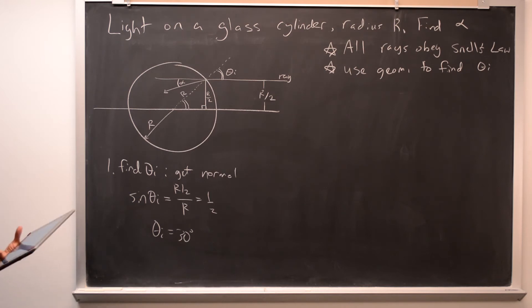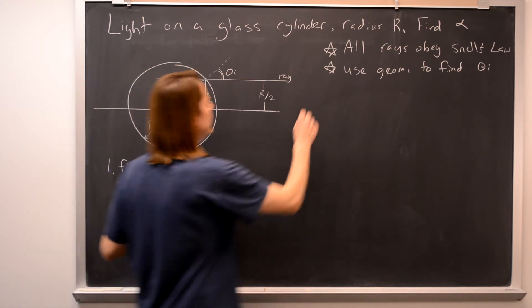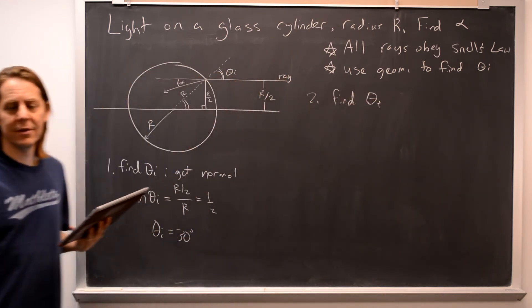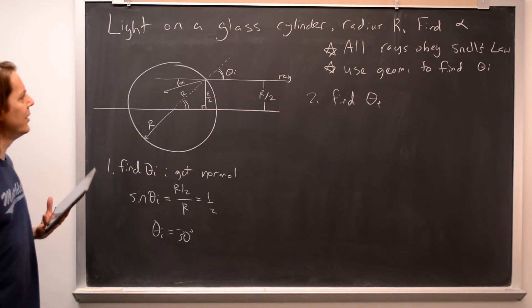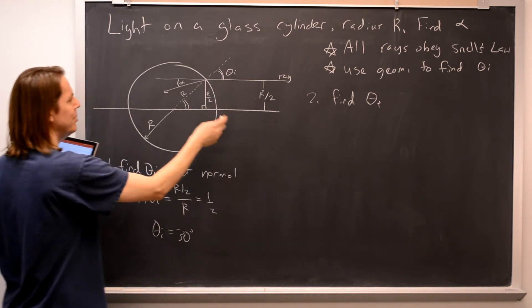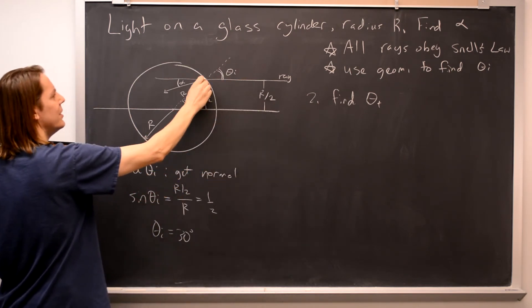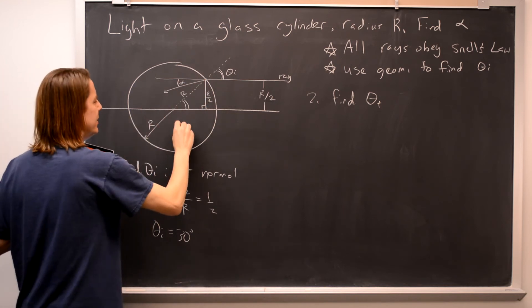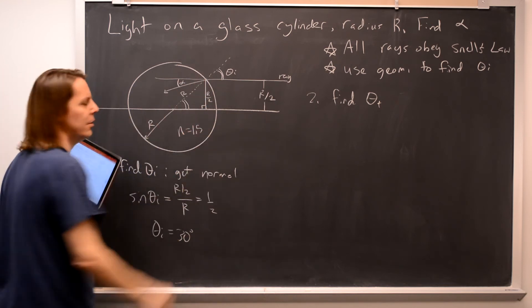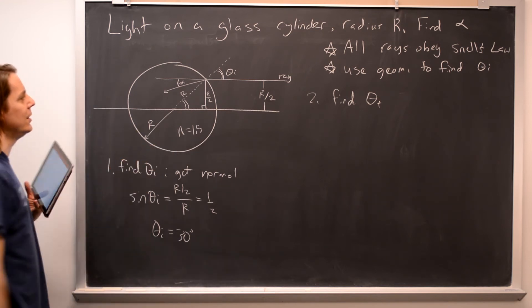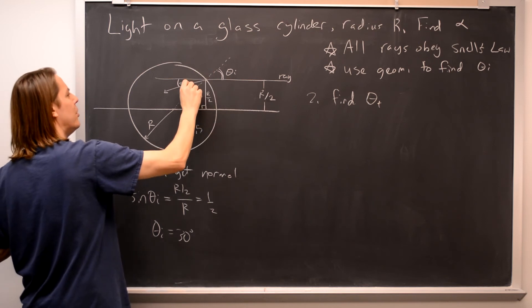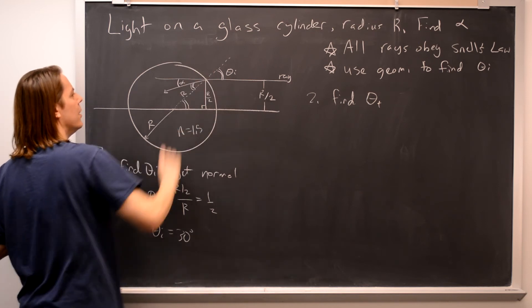Step two, I would say, is to find theta t, the transmitted angle into the glass. Because, let's see, this diagram is getting busy, but maybe you can see the light comes in, and remember the light falls towards the normal when it enters a medium of higher density. So this is n equals 1, equals 1.5. So it came in at theta i to the normal, and it's going to fall to a smaller angle to the normal theta t.